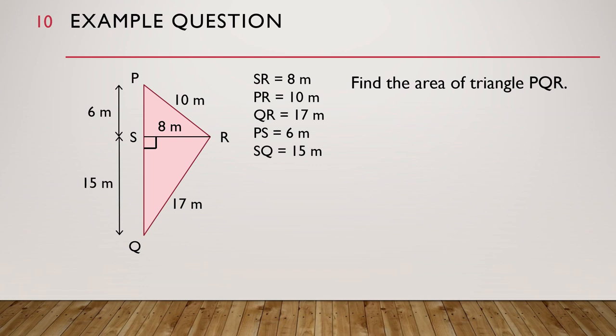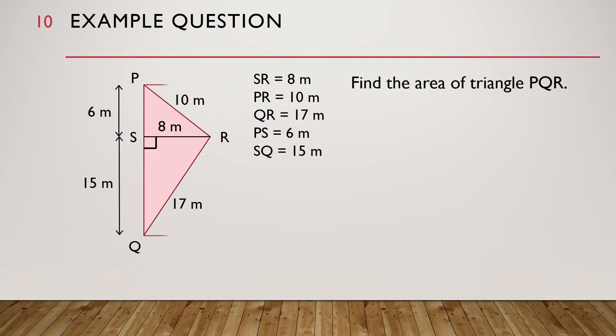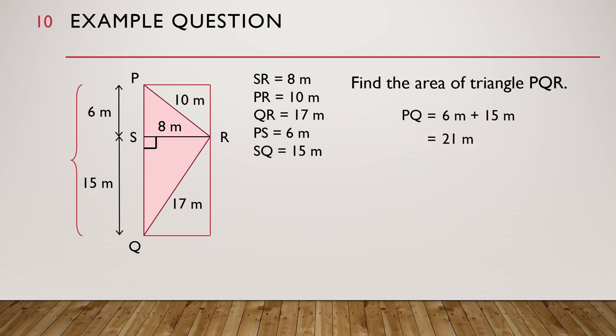Let's look at an example question. In this diagram we have triangle PQR; the measurements are as shown. The question asks us to find the area of triangle PQR. SR is perpendicular to PQ, so we are going to use SR as the height of the triangle and draw our related rectangle. Then PQ is equal to 6 meters plus 15 meters, which equals 21 meters. This will be the base of the triangle, and the height of the triangle is 8 meters.